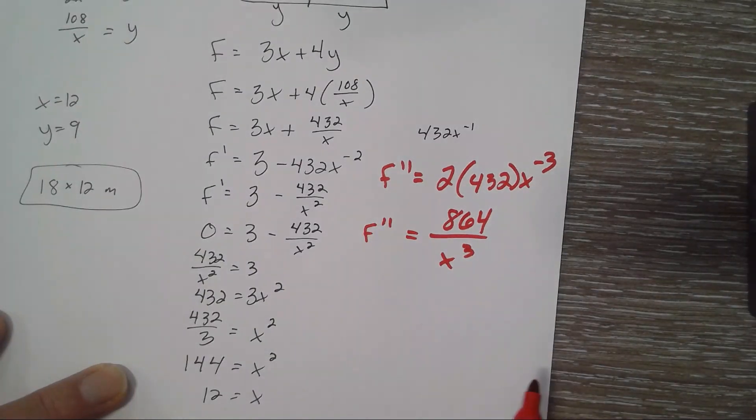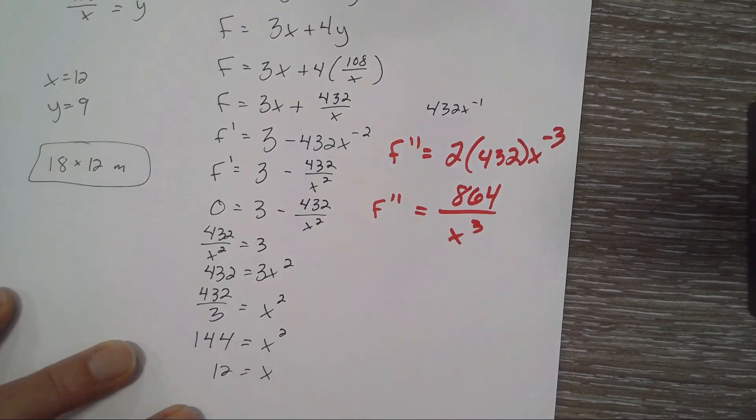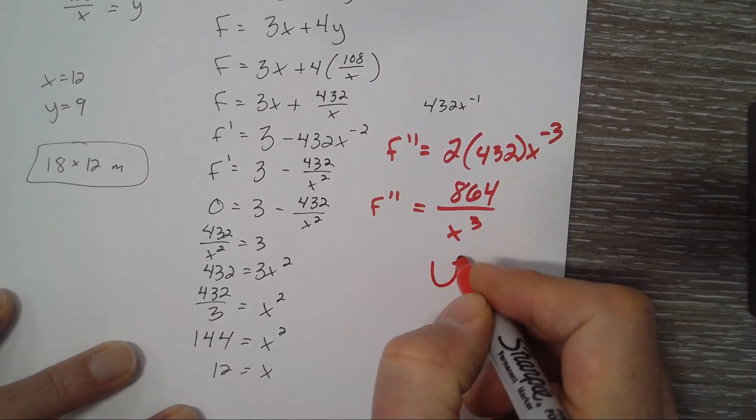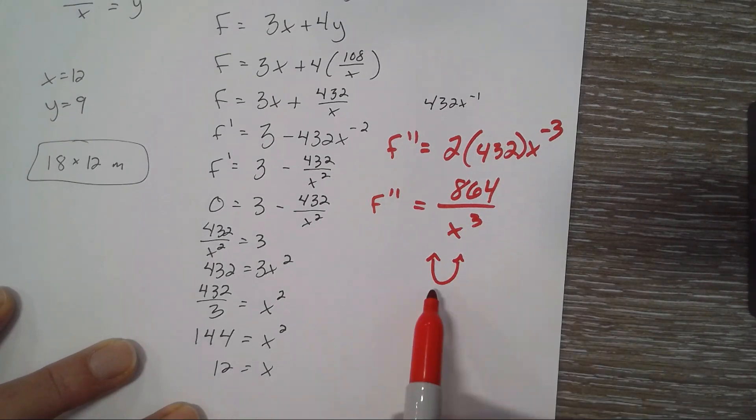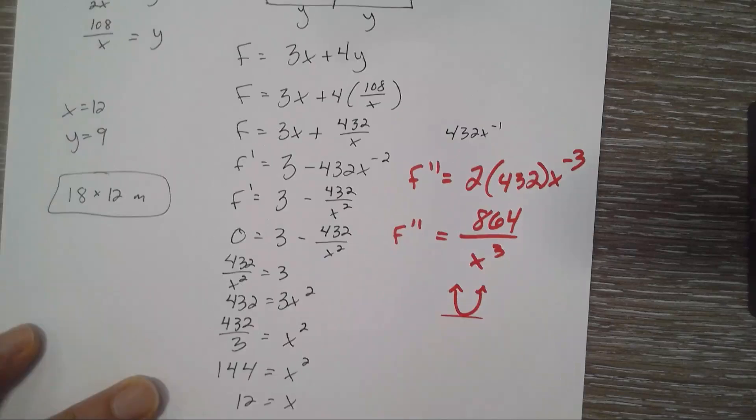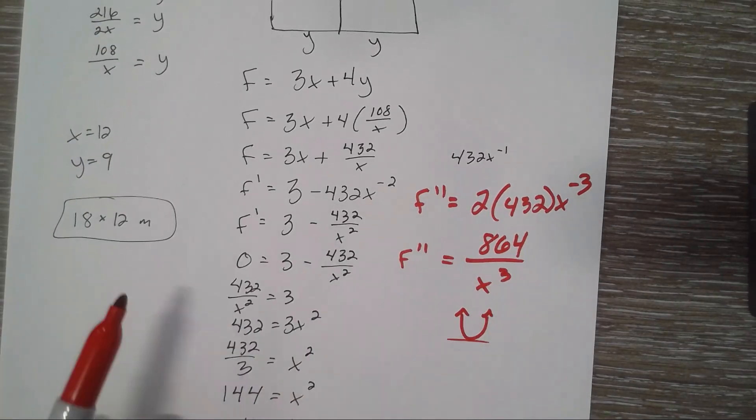And if I want to find out the concavity at 12, I can plug it in. It's going to be positive. I don't care what it is. It's positive. So it's going to be concave up. So at 12, we're going to have a minimum. And that's what we're trying to figure out. The least amount of fencing. So that would be our answer.